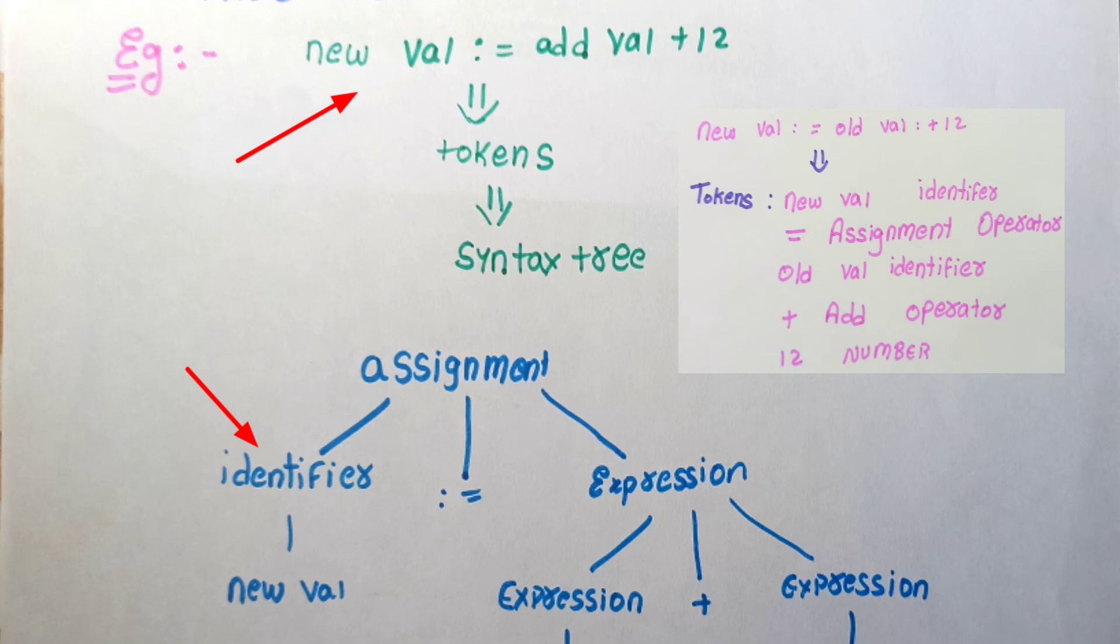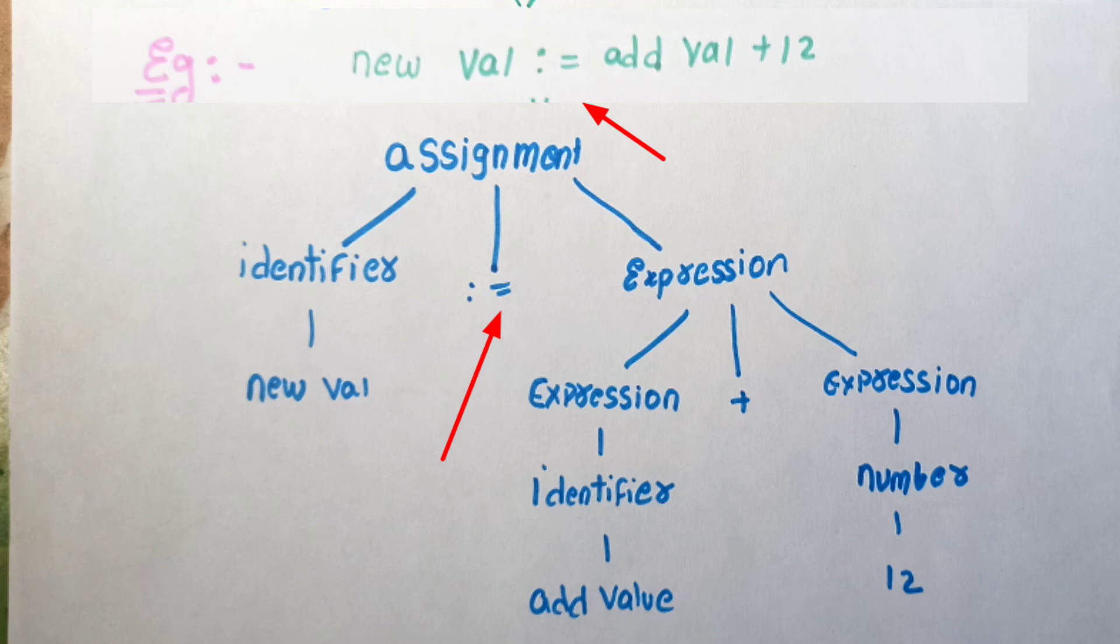We have to choose the tokens. The identifier is new val. Next, equals to is the assignment operator. Old val is an expression.